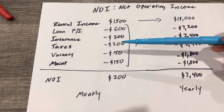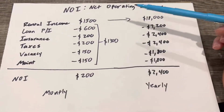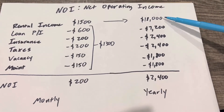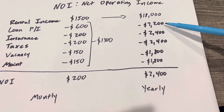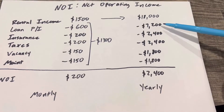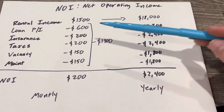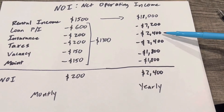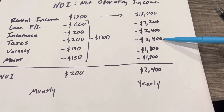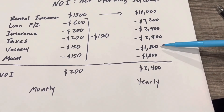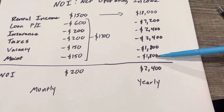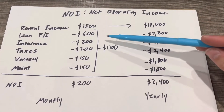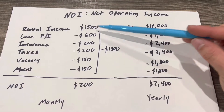Just annualizing these — stretching them out across the year — we're bringing in $18,000 in gross rents, $7,200 on our loan pay down. Now that's not all principal because it's principal and interest — we'll go into that more. Your insurance on the year is $2,400, your taxes $2,400, vacancy $1,800, maintenance $1,800. You'll notice that just after one year, we have enough in our vacancy reserve to cover one month's rent.